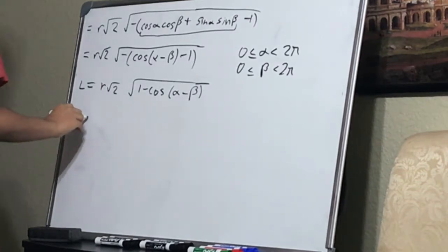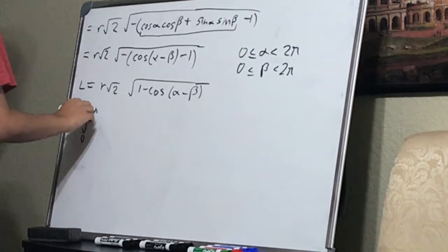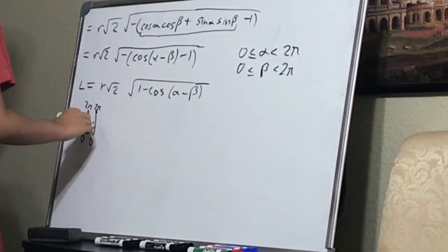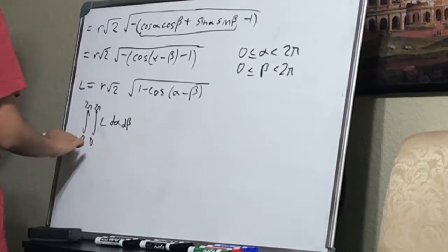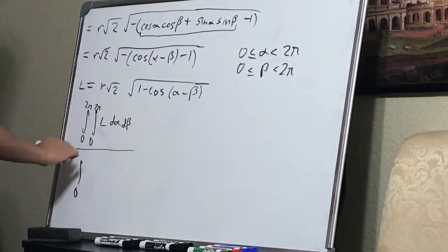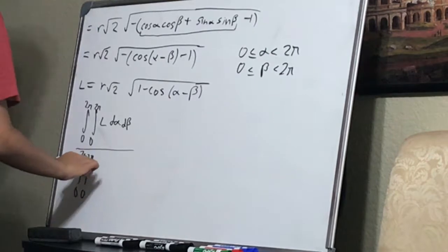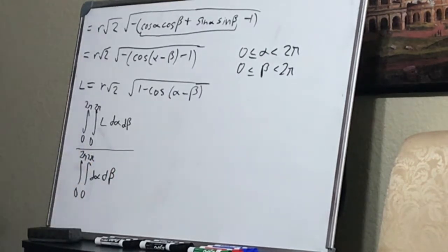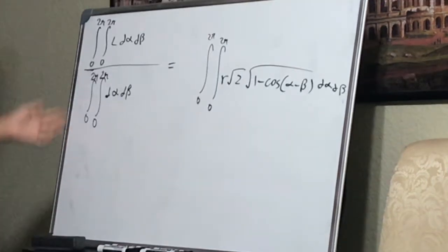So how do we do that? We actually take an integral. We take an integral from zero to two pi, then another integral for alpha, and we take the integral of the length with d alpha d beta. Then we divide by how many chords there are — divide by d alpha d beta. So here's our formula for the mean.